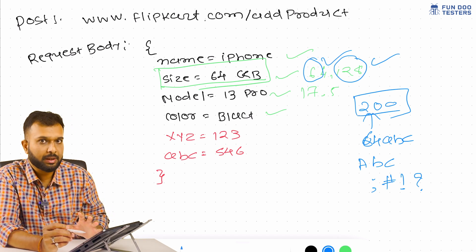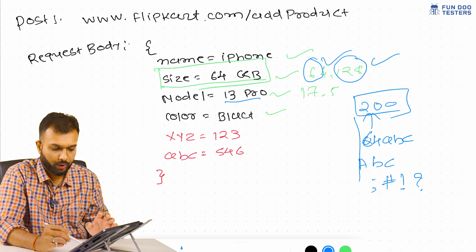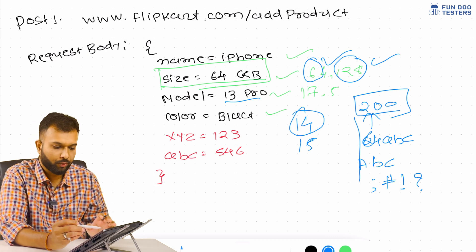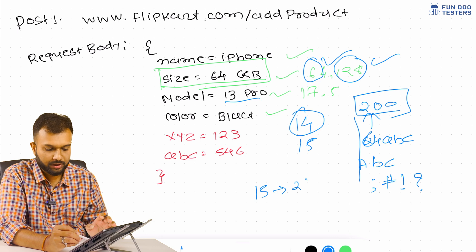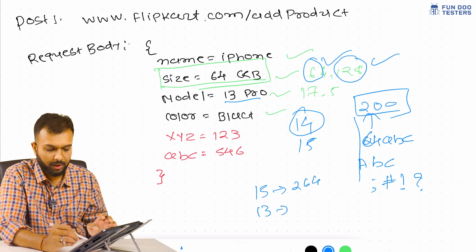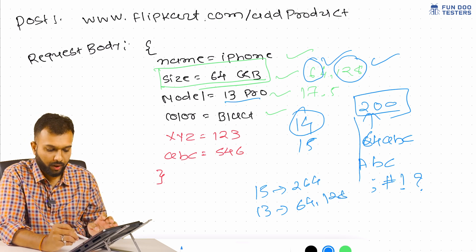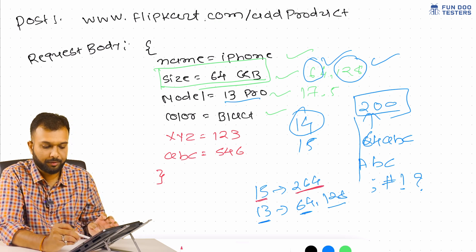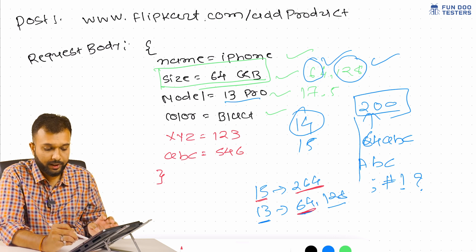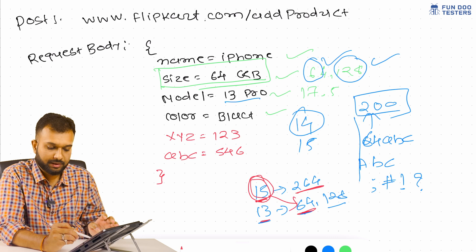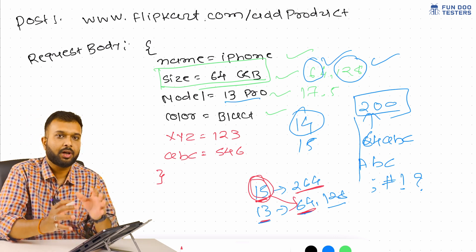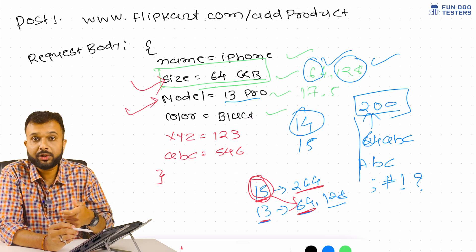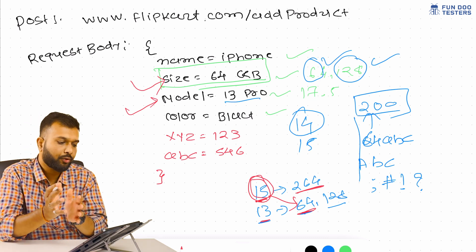For the model field, we test with values like 13, 14, 15. We also need to check invalid combinations — for example, iPhone 15 is available in 256 GB and iPhone 13 is available only in 64 and 128 GB. If selecting iPhone 13, valid sizes are 64 or 128. If passing iPhone 15 with 64 GB, it has to return an error. We need to come up with these combination scenarios for each request.